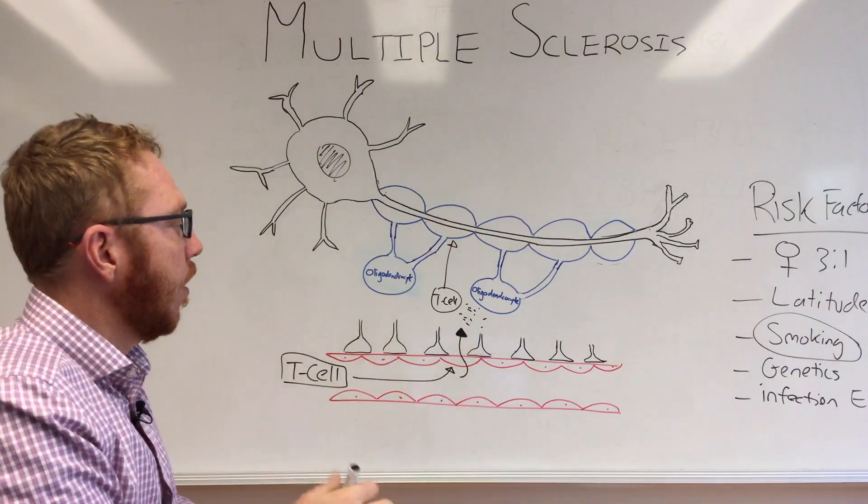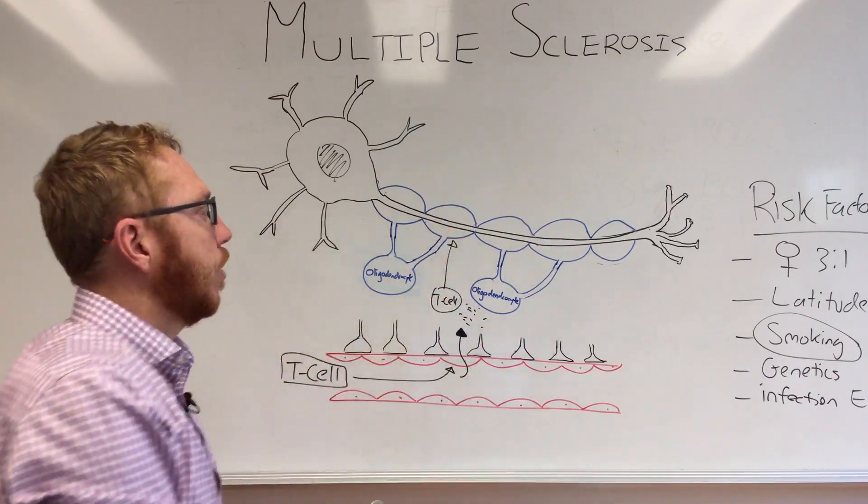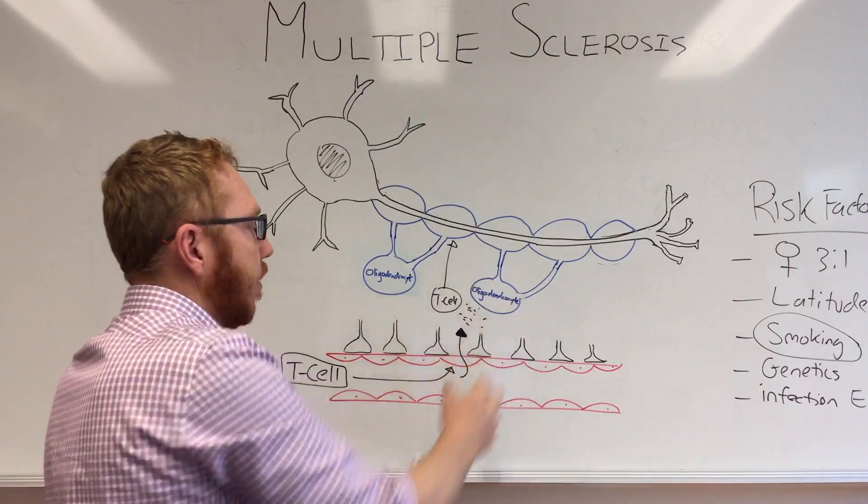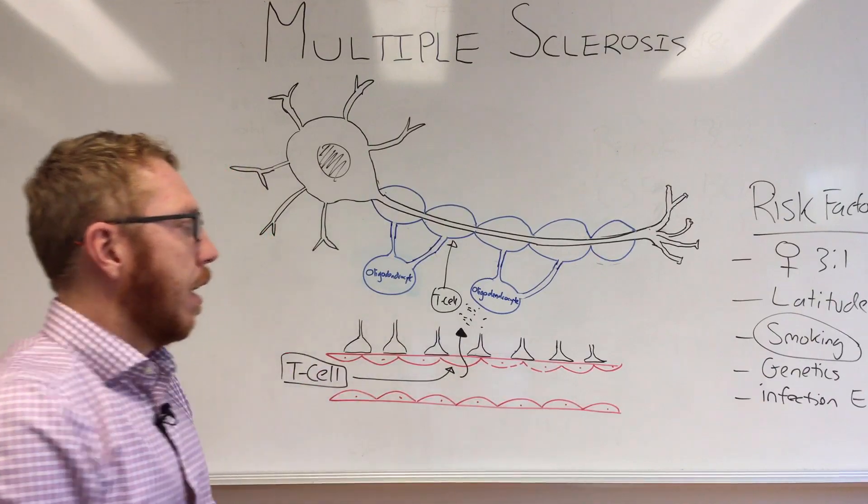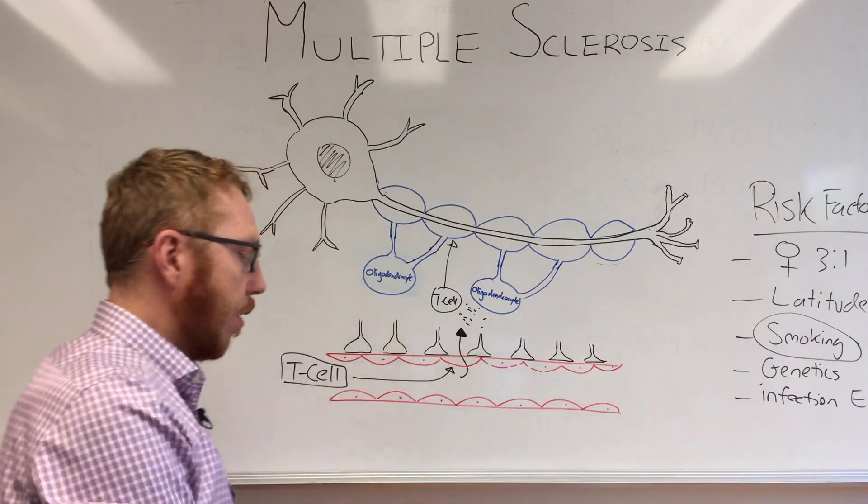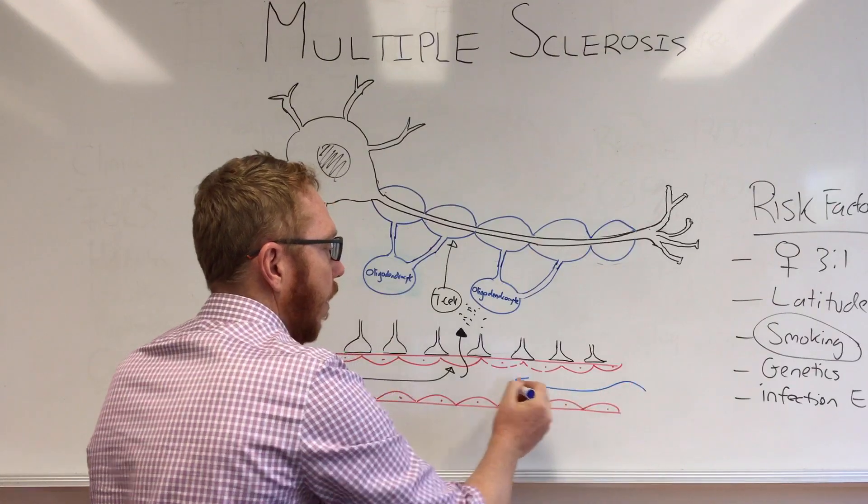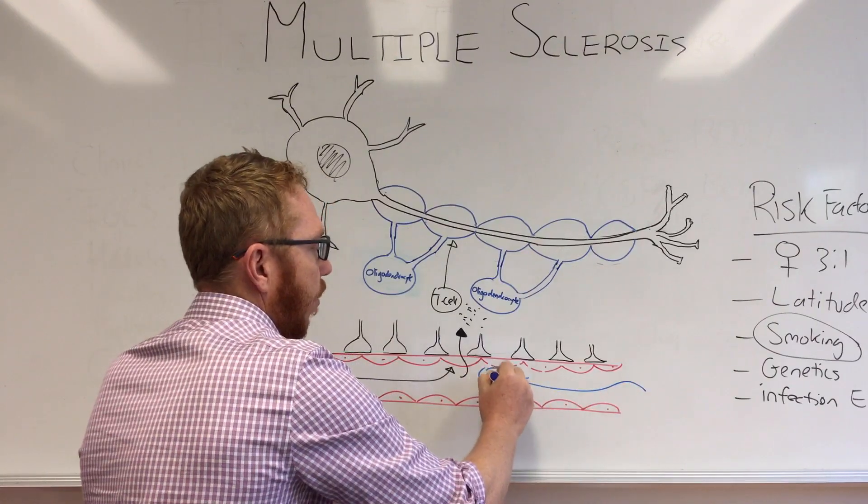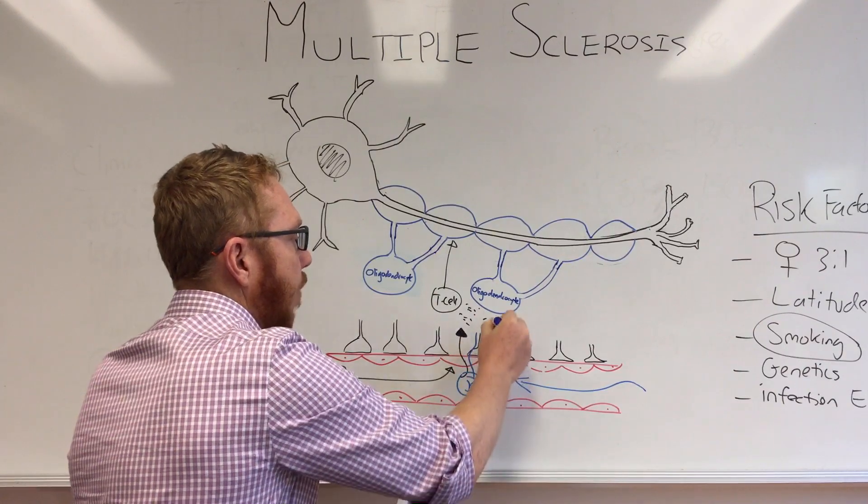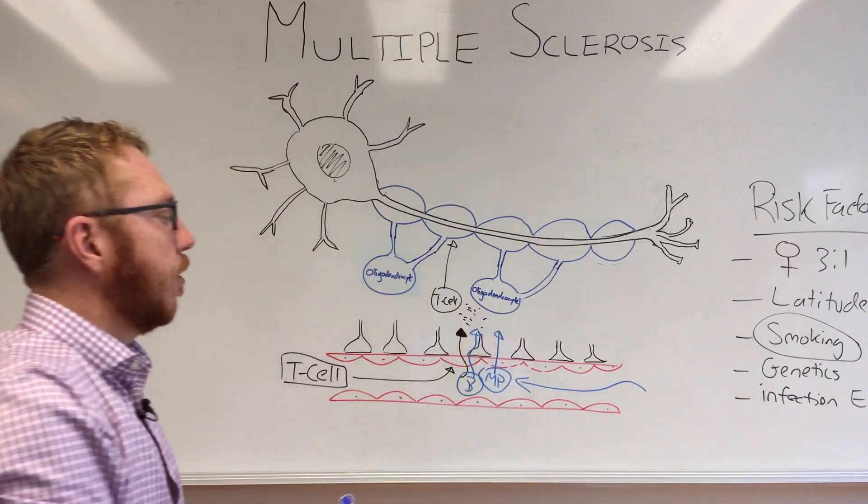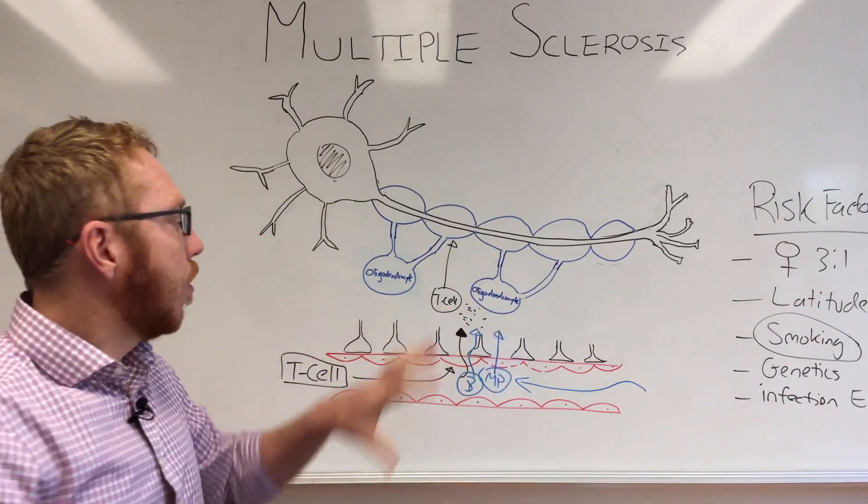With the T cell releasing its cytokines as it's reacting to the myelin, these cytokines can further cause breaching within the blood-brain barrier. But it also has the potential to bring other immune cells along such as macrophages and B cells. These are then able to come into the central nervous system and further aggravate the whole process.